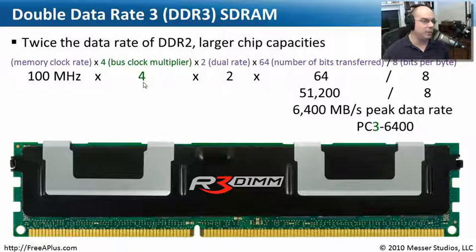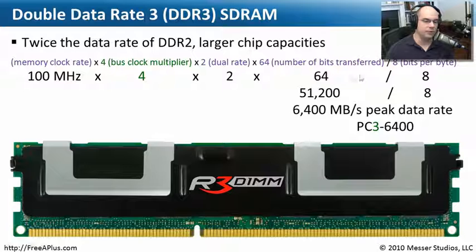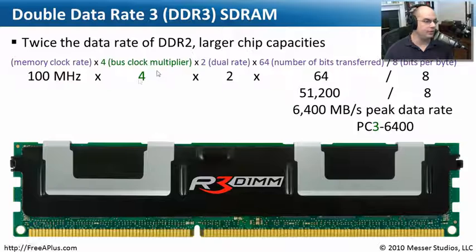Because it's DDR3, where we've doubled the data rate of DDR2, our bus clock multiplier goes up to 4. This is also dual rate DDR. We've got 64 bits that are transferred in every clock, and it's 8 bits per byte. Everything else stays the same; the only thing that's changed is that bus clock multiplier.